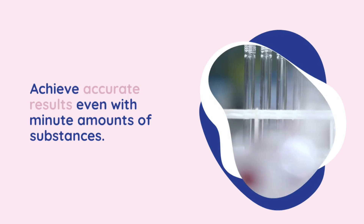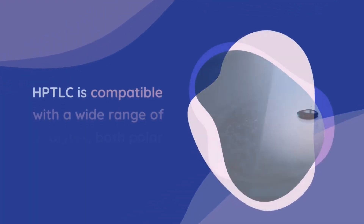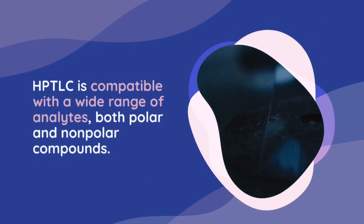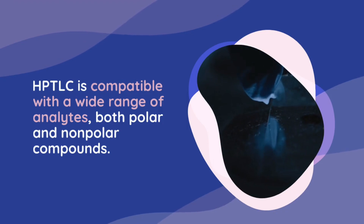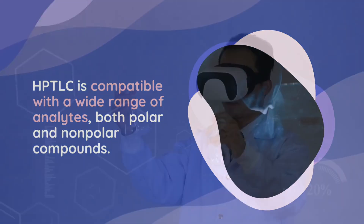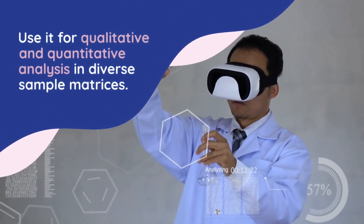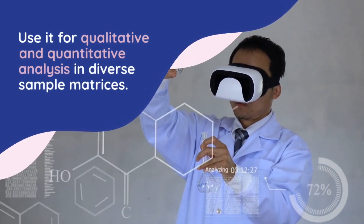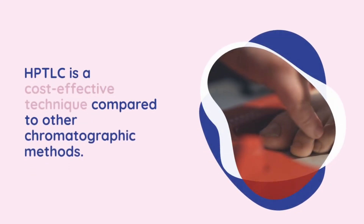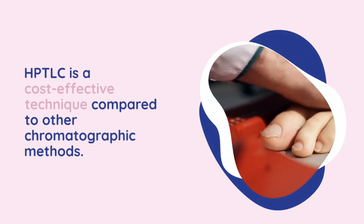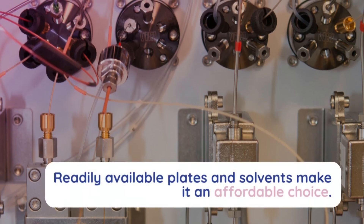3. Sensitivity: HPTLC can detect analytes at low concentrations, making it a suitable technique for trace analysis. 4. Versatility: HPTLC is compatible with a wide range of analytes, including both polar and non-polar compounds. It can be used for qualitative and quantitative analysis of diverse sample matrices. 5. Cost Effectiveness: HPTLC is a relatively inexpensive technique compared to other chromatographic methods. The plates and solvents used are readily available and cost-effective.